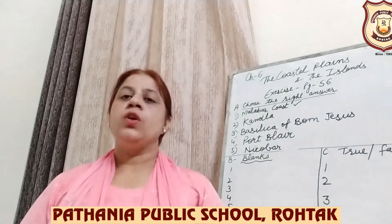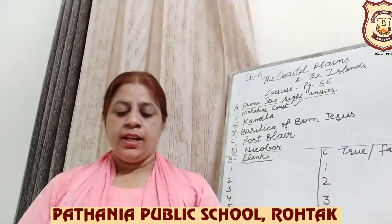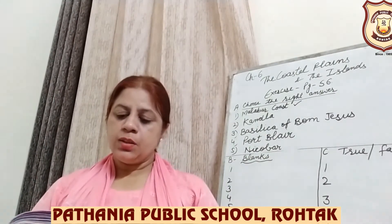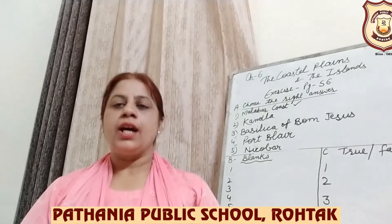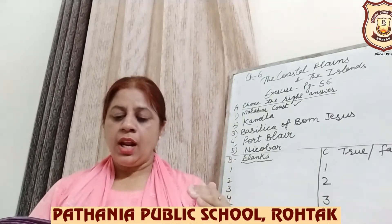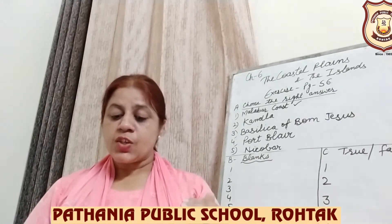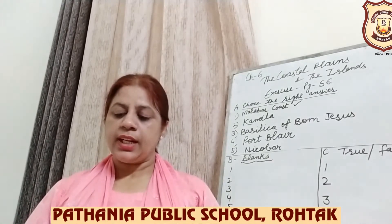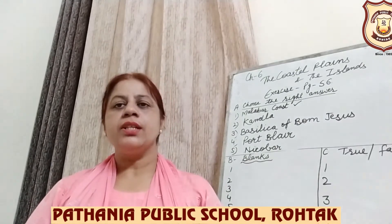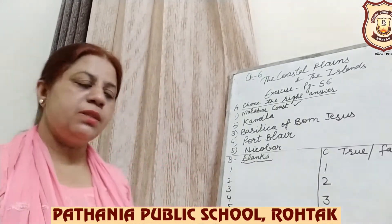Now Part B — fill in the blanks. Number 1: The dash of India extends along the coastline all around the peninsula. The answer is 'coastal plains.' You have to write 'coastal plains.'